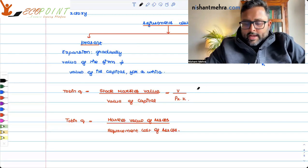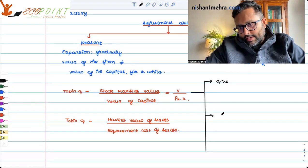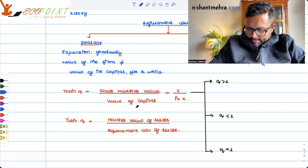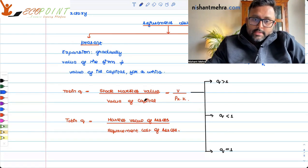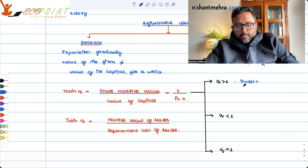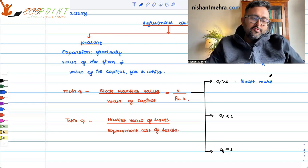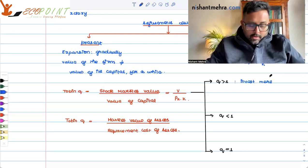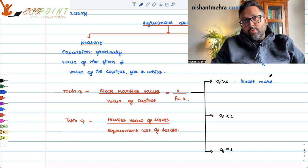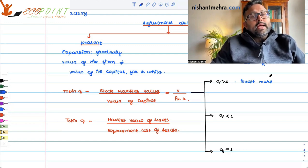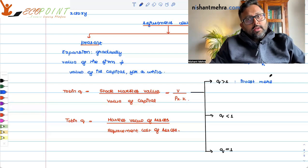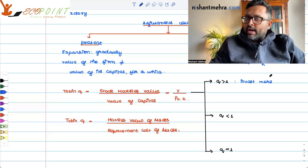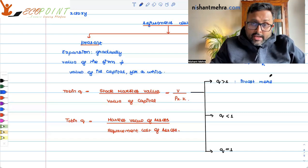This Q can be greater than one, less than one, or equal to one. When Q is greater than one, it means the stock market value is greater than the value of the capital, so the firm should be investing more. The stock market is valuing the firm more than the value of its capital — the company is being valued at a premium. This is the time when the company should be issuing new shares and new debt, taking advantage of the fact that the stock market is valuing the stock at a higher price.